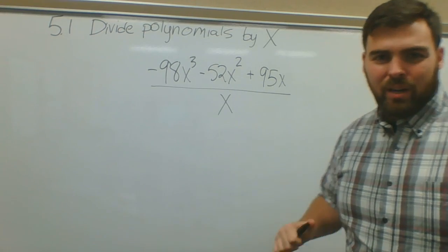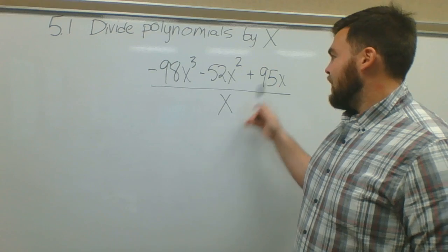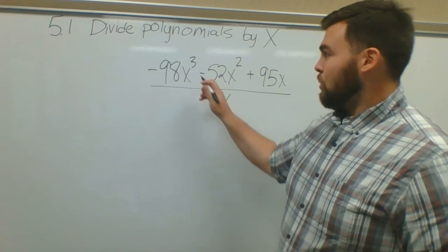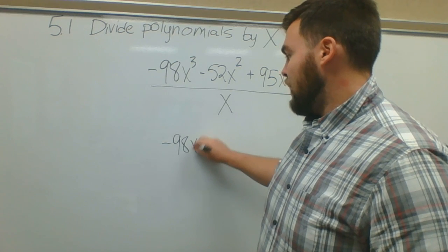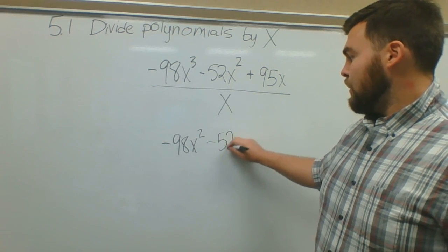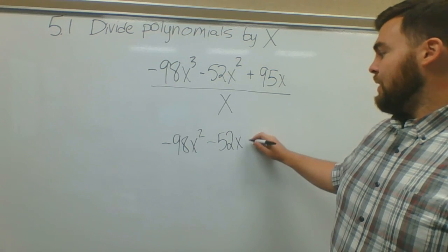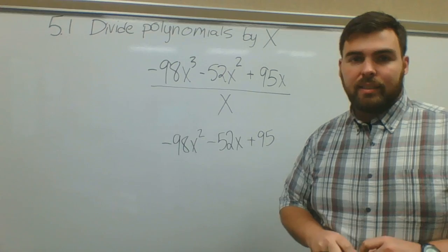I don't really care what the coefficients are, right? All I'm going to do is take an x from there and x from there and x from there. So before it was negative 98x the third, negative 98x squared; negative 52x squared, negative 52x; 95x, 95. That's as simple as it is.